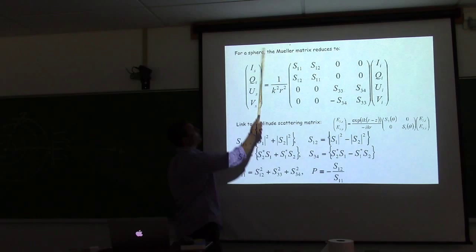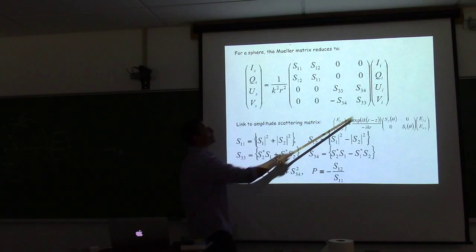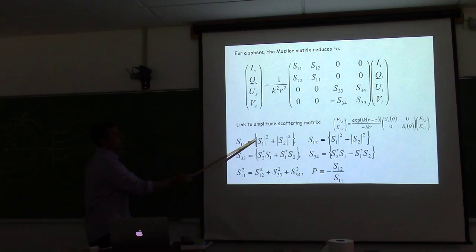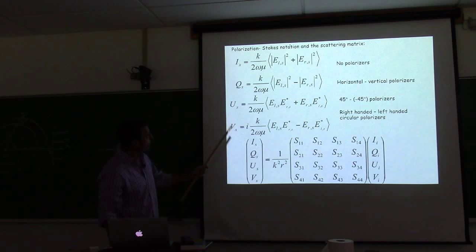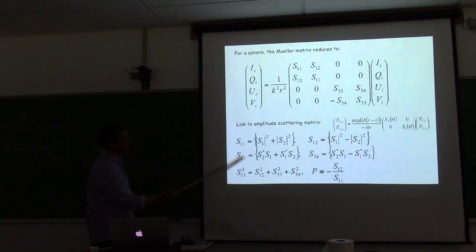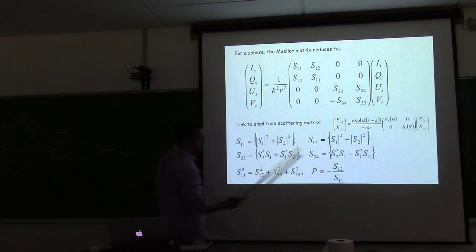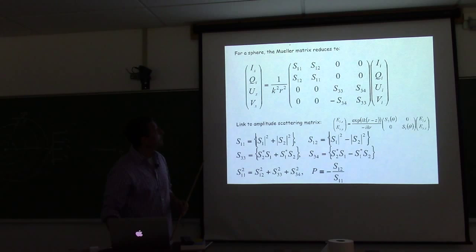Bringing in the symmetries associated with a sphere, we're down to four independent elements in the Mueller matrix — out of 16 elements, you're down to four. Now we relate the S1 and S2 from the previous slides, the ones we solve for, to the Mueller matrix elements. These are complex numbers, so you have complex conjugates. The first element has to do with the volume scattering function. If we normalize all the others by it, this element gives you the depolarization ratio — the linear depolarization ratio. These are things that Ken covered.